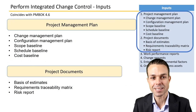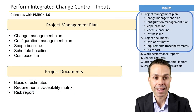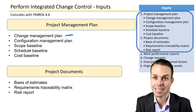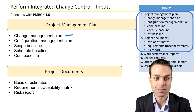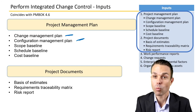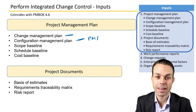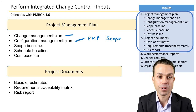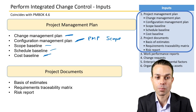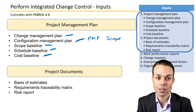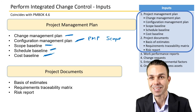Looking at the inputs in more detail: from the project management plan we might have the change management plan — how are we actually managing those change requests? — and the configuration management plan, specifying what documents or items have been baselined, whether it's the project management plan or the scope statement. The scope baseline, schedule baseline, and cost baseline are all locked at a certain point in time. If they need changes, we need to know about those, and they'll be an input into this process.